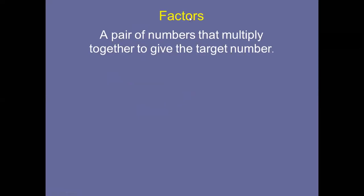Factors are a pair of numbers — pair means two — that multiply together to give the target number. So two numbers multiplied together give us a target number.